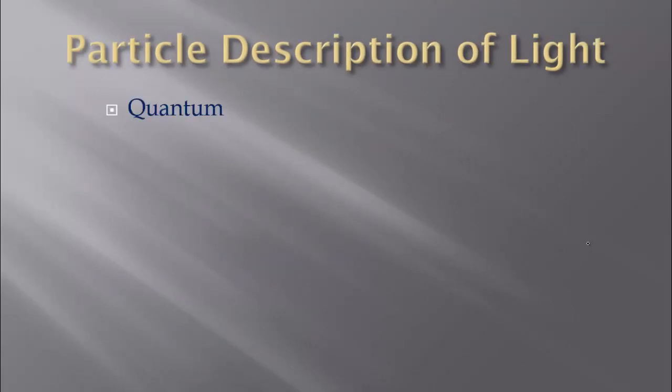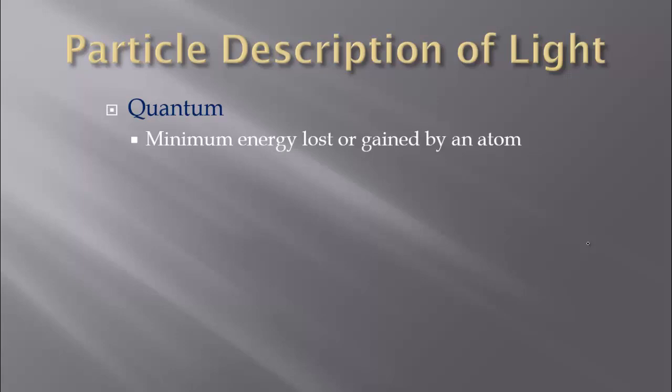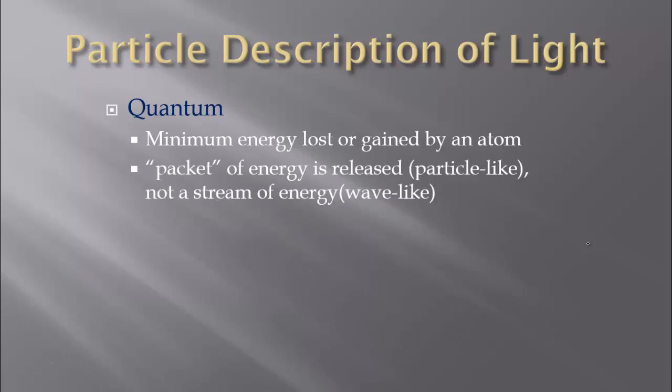So if we can't describe it in waves, why not describe it in particles? When we look at particles, we have to give this idea of light as a particle. We call it quanta — this is the minimum energy lost or gained by an atom. Not all light can move that electron, so it has to be some minimum energy. A quantum is a packet of energy that can be released, which is particle-like, and not a stream of energy, which would be more wave-like.